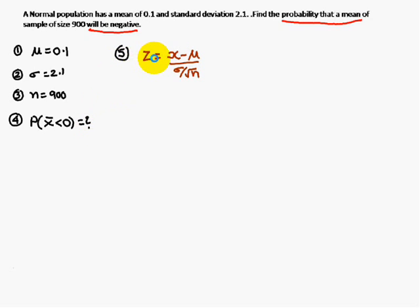For this we will use the formula z equals x̄ minus μ by σ over root n.